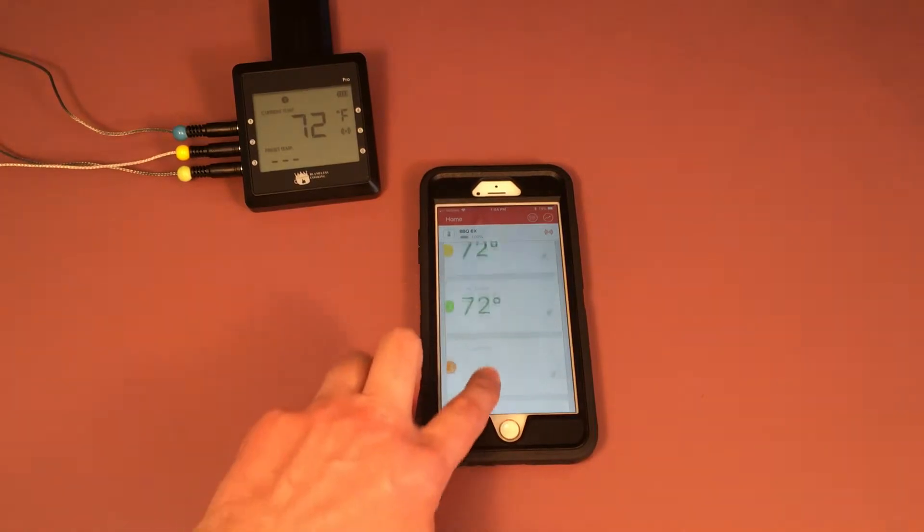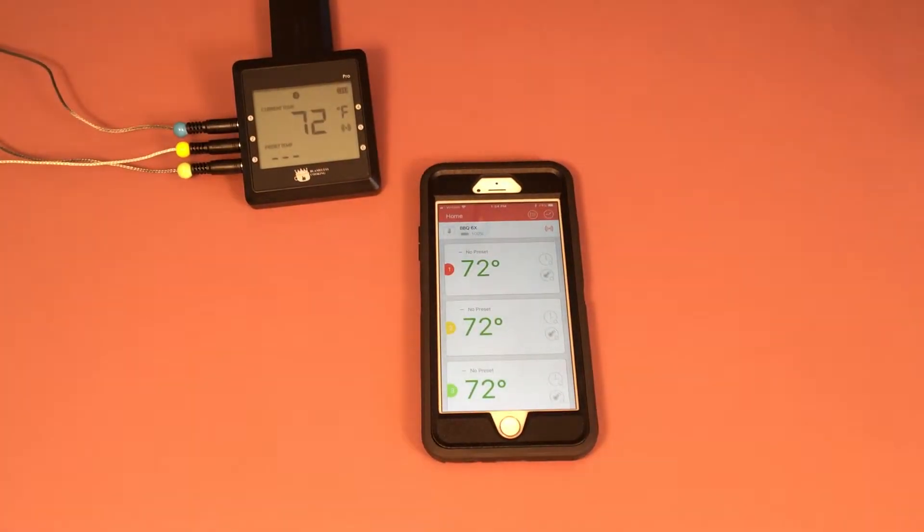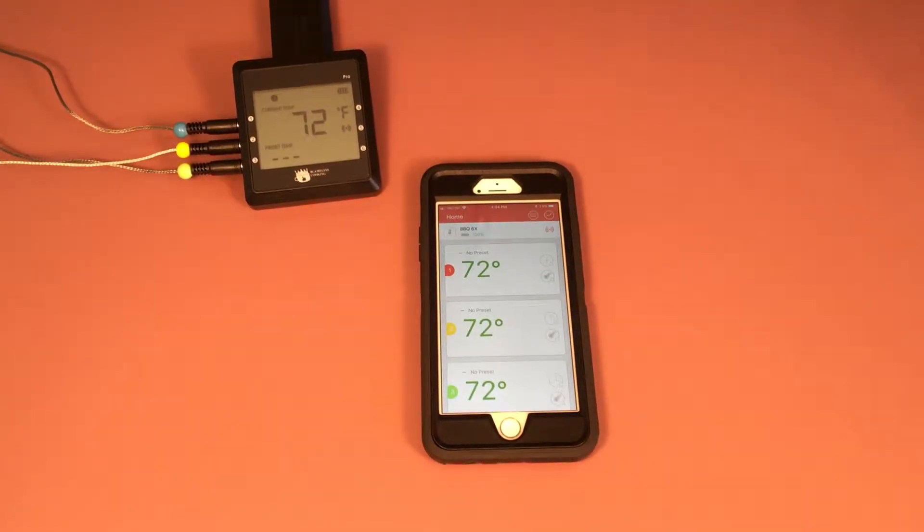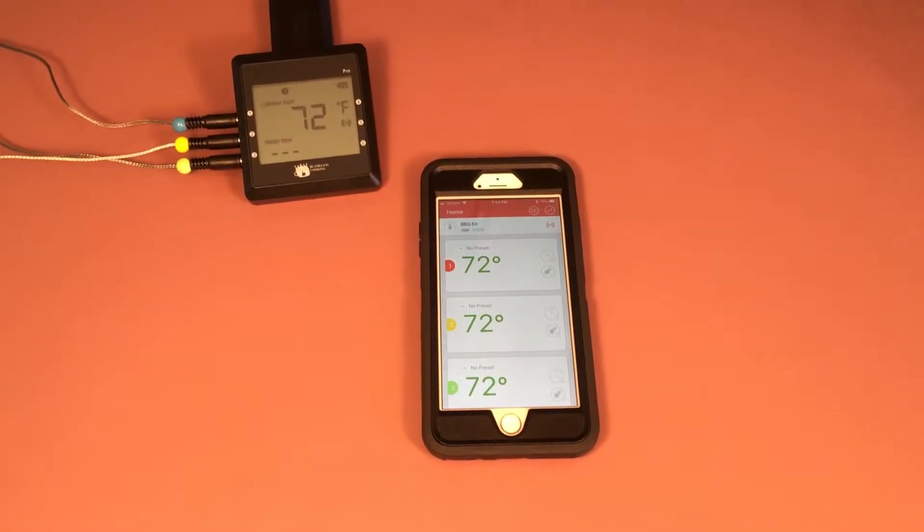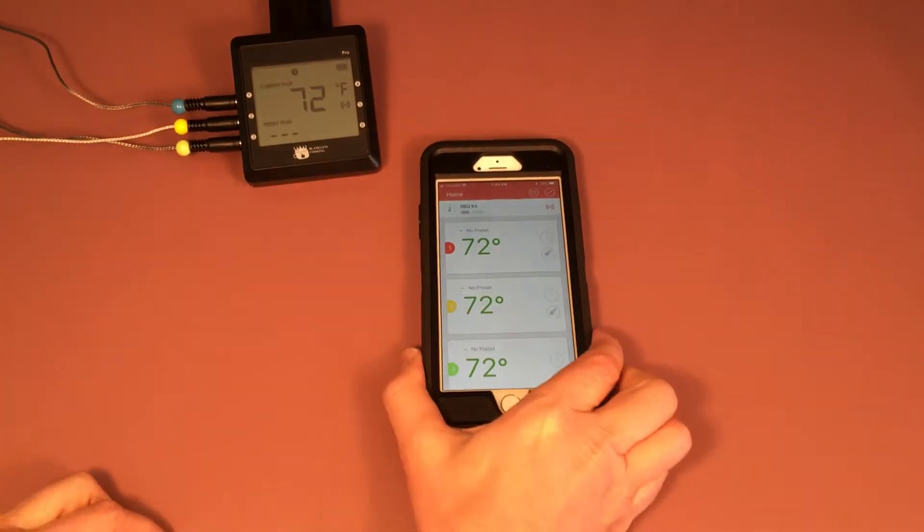If we scroll down here, we have three more for the other three probes, so you have a total of six so that you can have up to six pieces of meat at the same time for all of your family or friends. Now we're going to go into the settings for the thermometer.